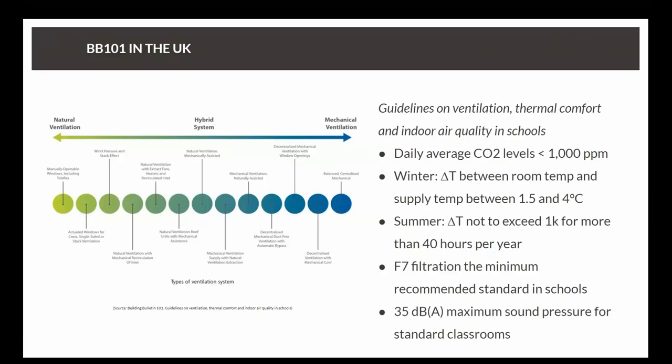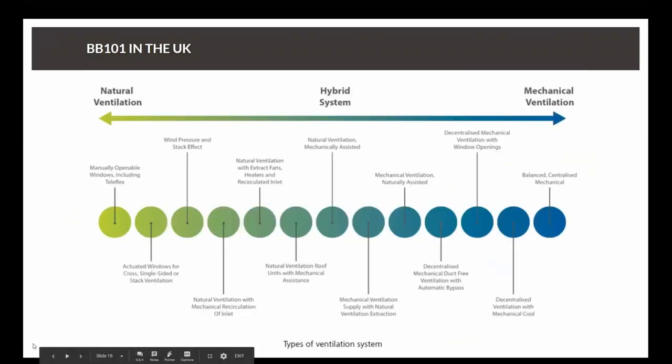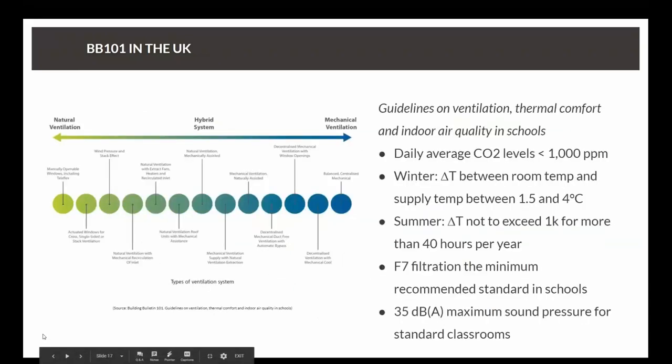Finally in the last year this was recognized and led to a reissue of BB101. BB101 is the guidelines on ventilation, thermal comfort and indoor air quality in schools. To give you a brief overview of what that involves, you can see a number of points here on the screen. Whilst we previously just looked at flow rates, we're now looking at predetermined CO2 levels that we need to achieve. We also have requirements on the temperature difference between supply air and room air, filtration standards at F7, specific delta T requirements for summer, and sound pressure levels.